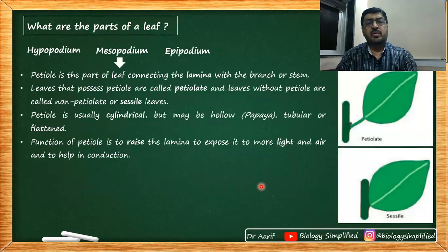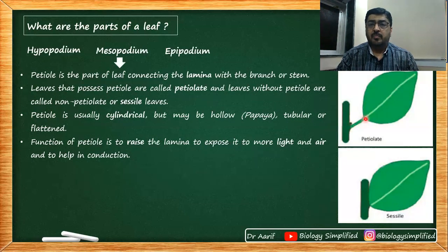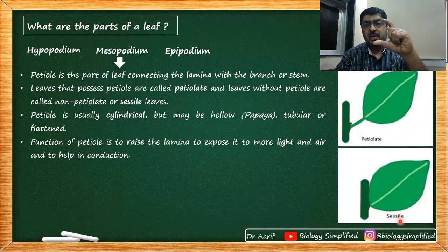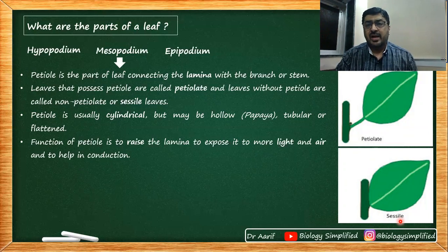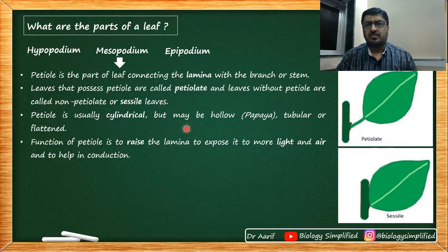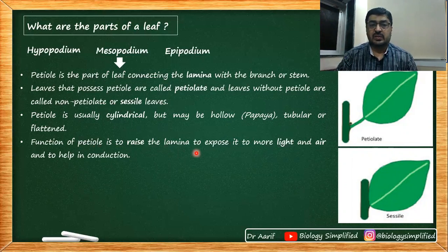The mesopodium is the petiole — the part connecting the leaf base to the lamina. If the petiole is present, the leaf is petiolate; if absent, it is non-petiolate or sessile. 'Sessile' is a general term used whenever a stalk-like structure is absent. The petiole is usually cylindrical but can be hollow (as in papaya), tubular, or flat.